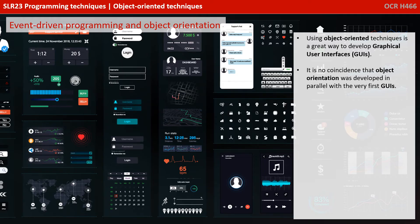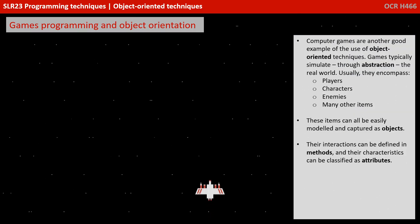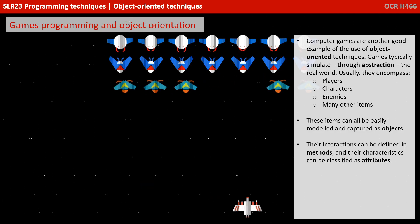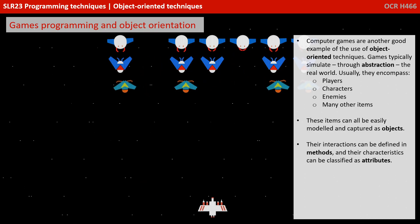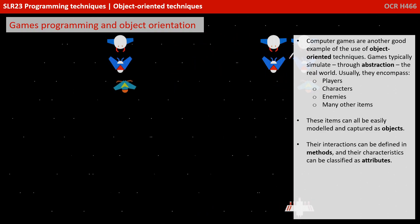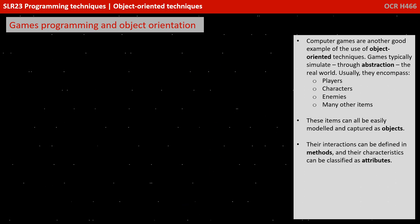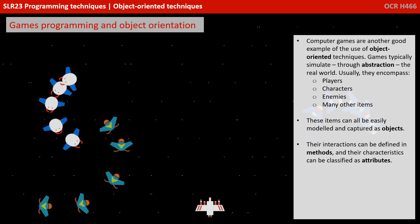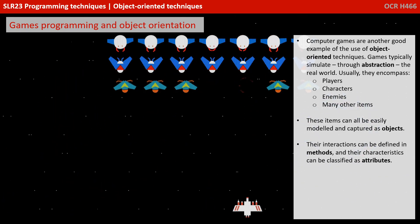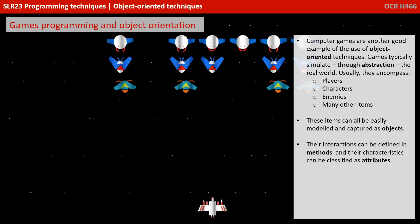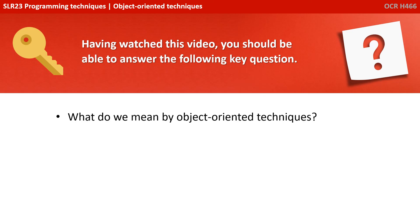It's no coincidence that object orientation was developed in parallel with the very first GUIs. Computer games are another good example of the use of object-oriented techniques. Games typically simulate, through abstraction, the real world, and usually encompass players, characters, enemies, and hundreds of other items. These items can all be easily modelled and captured as objects, their interactions defined in methods and their characteristics classified as attributes. Having watched this video, you should be able to answer the following key question: what do we mean by object-oriented techniques?